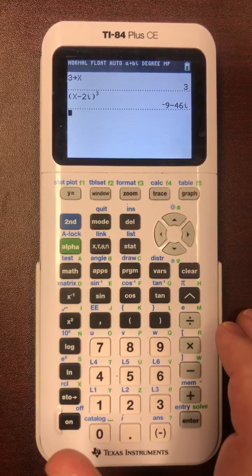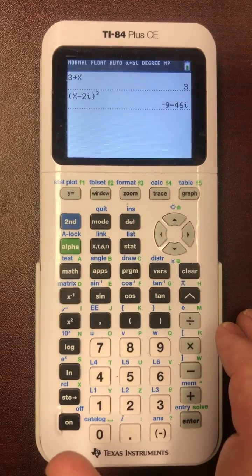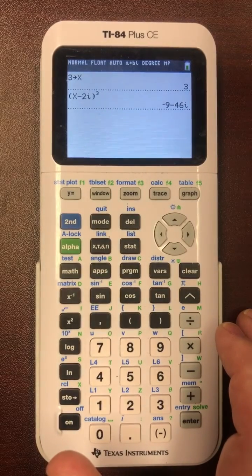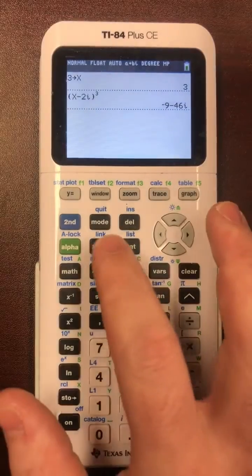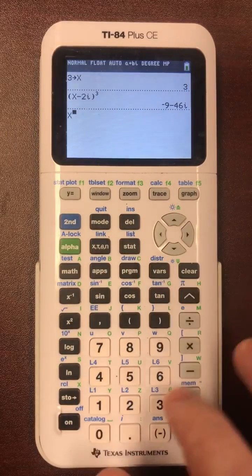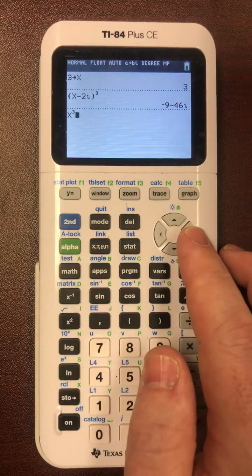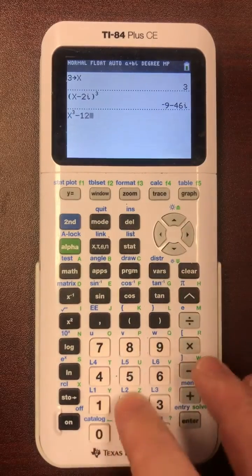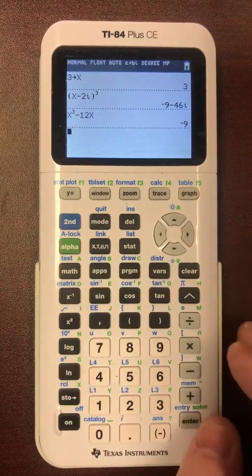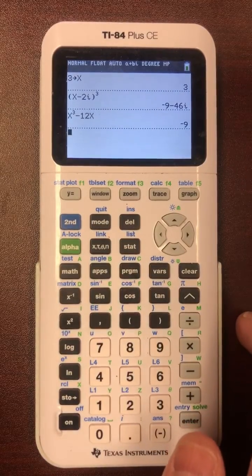Instead, if you look at the problem in the book, we can first do all the terms that do not have an i component. In this case, you'll notice we start with x cubed, and then we have negative 12x. So we can type in the two non-i components. And what do you know? We get negative 9.